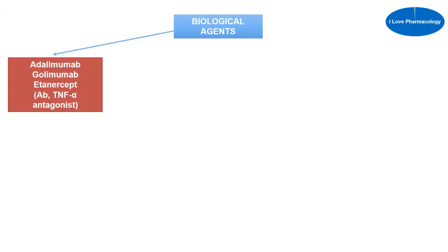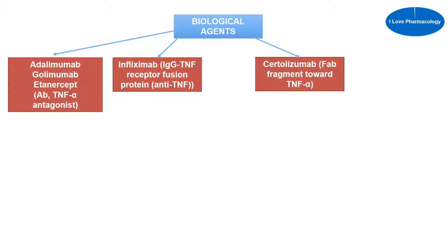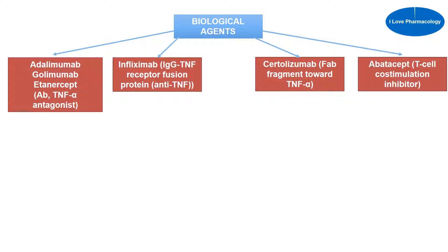Moving on to the biological agents — we have adalimumab, golimumab, and etanercept; all three are tumor necrosis factor alpha (TNF-α) antagonists. Next we have infliximab, which is an IgG TNF receptor fusion protein. Next we have certolizumab, which is a Fab fragment targeting TNF-alpha. Next we have abatacept, which is a T-cell co-stimulation inhibitor.